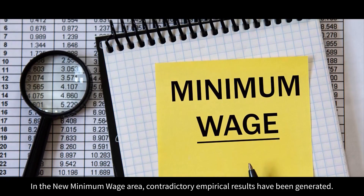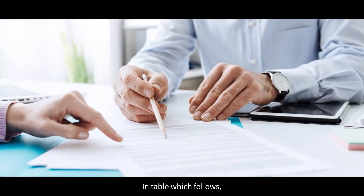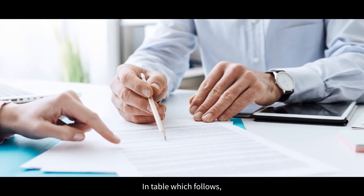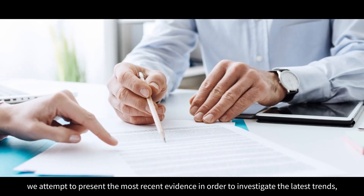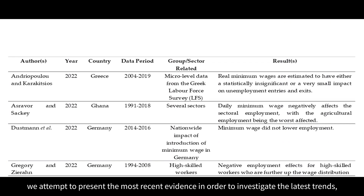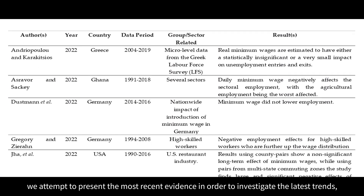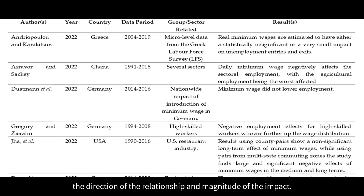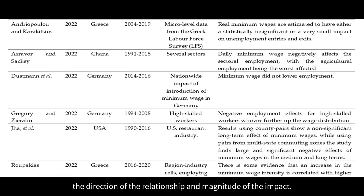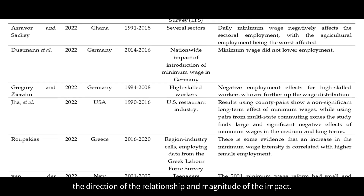In the new minimum wage area, contradictory empirical results have been generated. In the table which follows, we attempt to present the most recent evidence in order to investigate the latest trends, the direction of the relationship, and the magnitude of the impact.